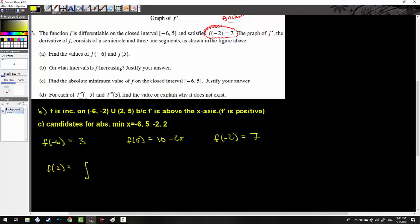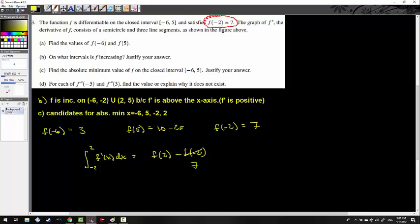So that's going to be the integral from -2, again, I will use my anchor as the baseline, from -2 to 2 of f'(x) dx. I'm going to say the integral here is going to give me f(2) minus f(-2). This is 7, we know that. So f(2) is equal to 7 plus the integral from -2 to 2 of f'(x) dx. We just have to find out what that is.